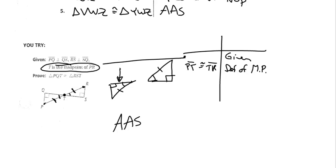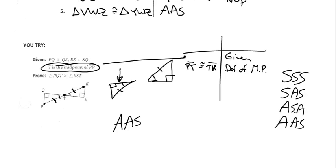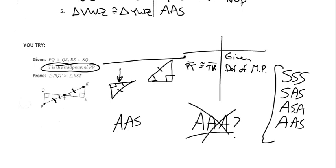All right, let's finish this up. Just make sure you know that our shortcuts are SSS, SAS, ASA, and AAS. Those are the only shortcuts we know as of right now. There are other cases — SSA and AAA — we don't know about those yet. Those are the shortcuts you can use. Thanks for watching, sorry that one went so long.